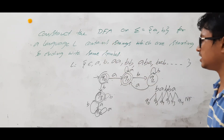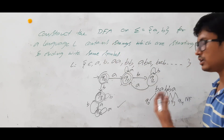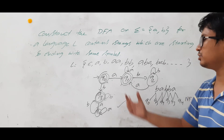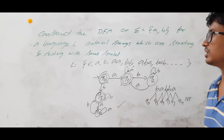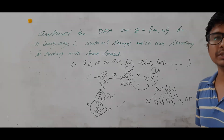So this DFA accepts strings which are starting and ending with the same symbol, and rejects strings that do not belong to language L. This is the DFA, and it is also a minimized DFA — we cannot reduce the number of states. Thank you so much.